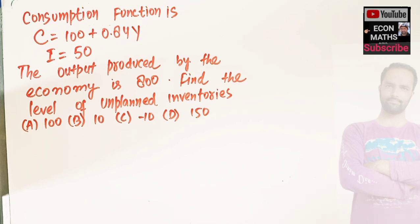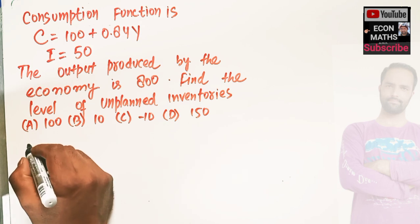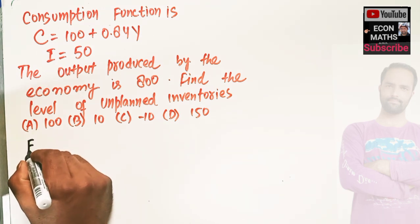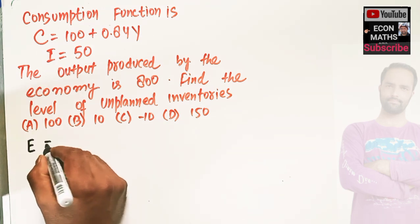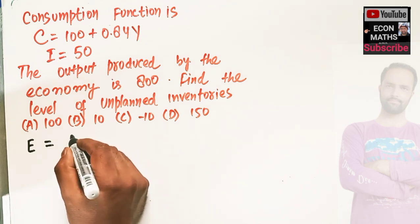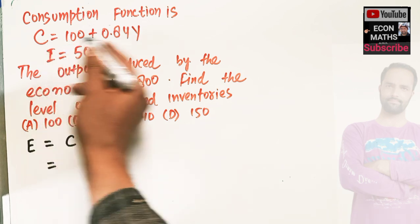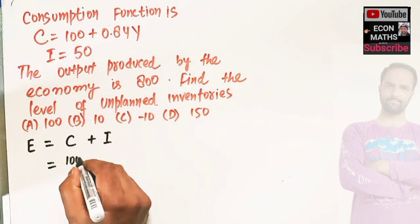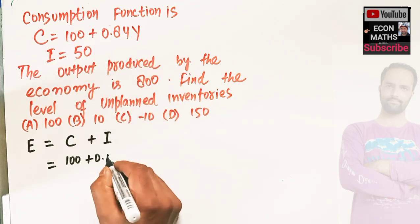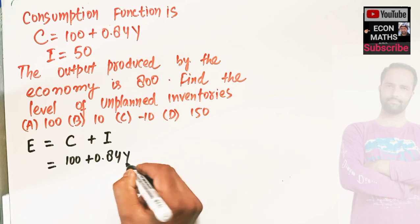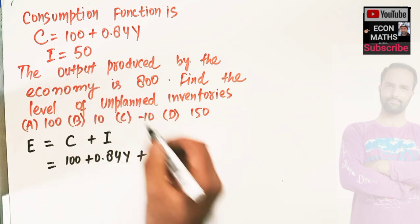First, let us find out the expenditure here. Let us denote E as the expenditure. Expenditure is equal to the consumption expenditure plus investment expenditure. That means, consumption function is given as 100 + 0.84Y, plus in place of I we have 50.